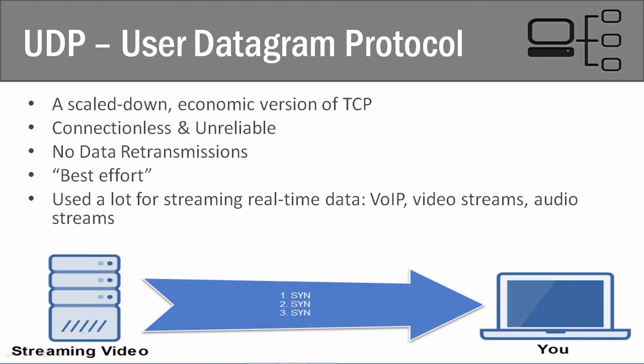But in instances like real-time data — VoIP, real-time video streams, real-time audio streams — we don't care, and there really is no reason to have retransmission of data because it's live. It's not data that you're going to wait and pause to watch. If it's live, the data is already gone and it really doesn't matter. So that is UDP and those are the instances in why we would use it. In the next video, I'm going to do a big comparison to show the difference between UDP and TCP, and show how many more resources are required to send TCP.